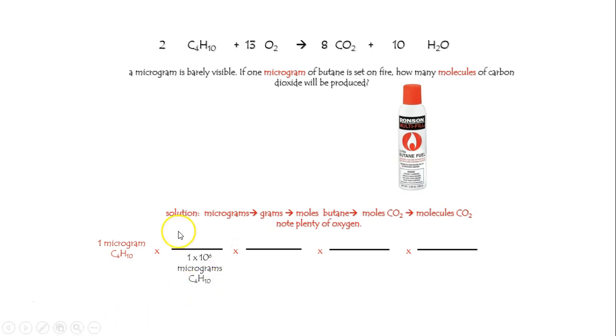One million micrograms is a gram. Notice how it cancels. 58 grams of butane, that's 12 for each carbon and one for each hydrogen, is equivalent to a mole of butane.